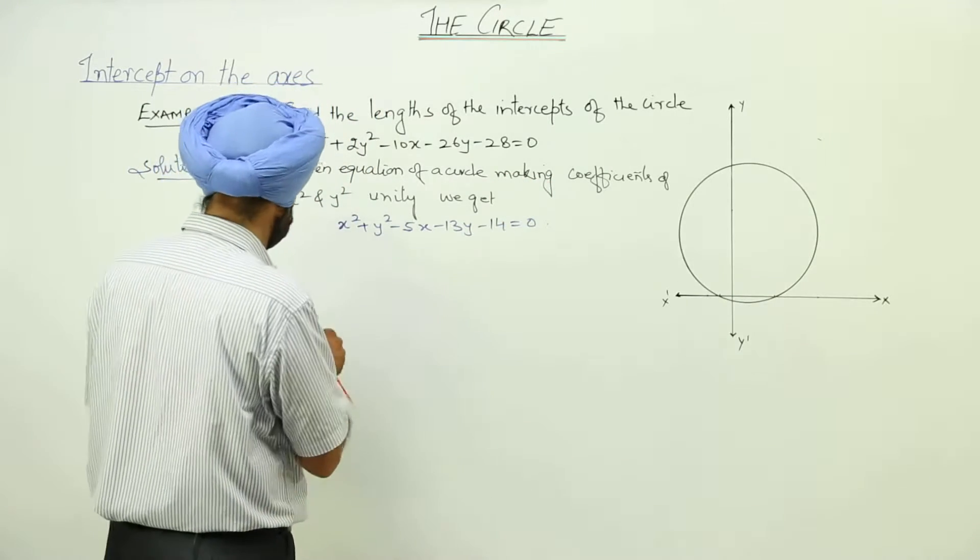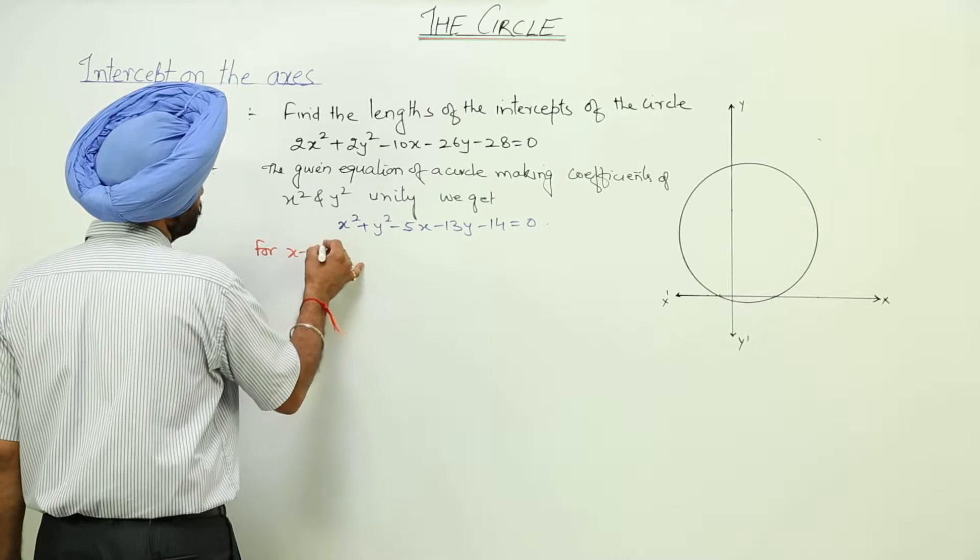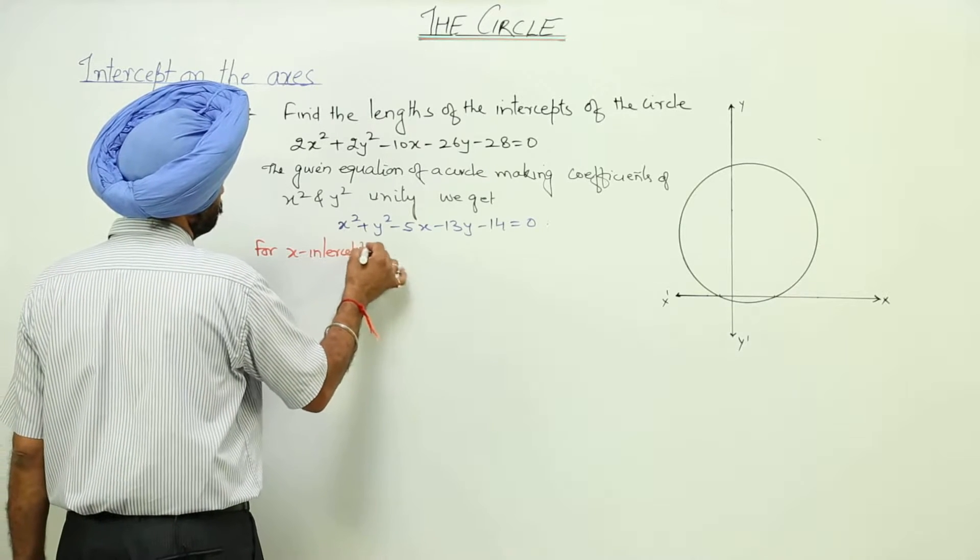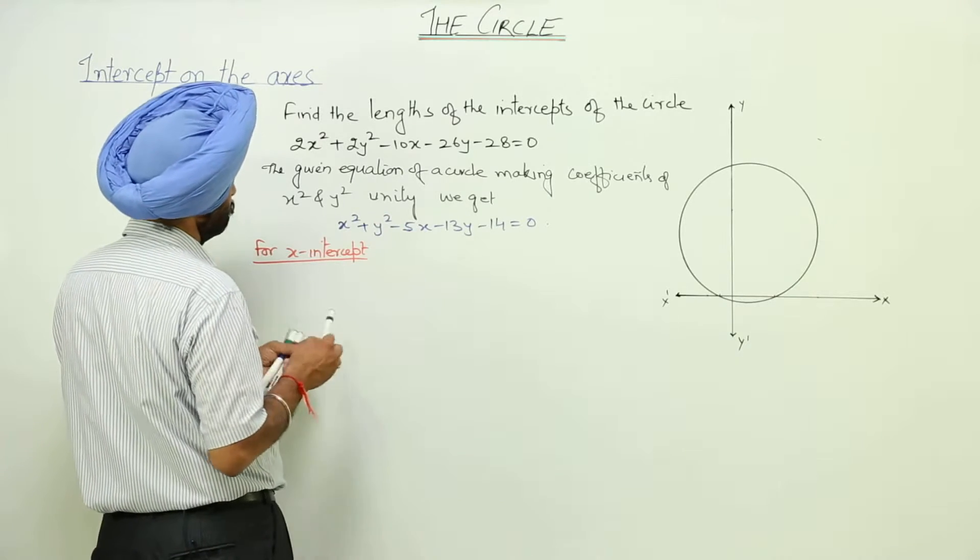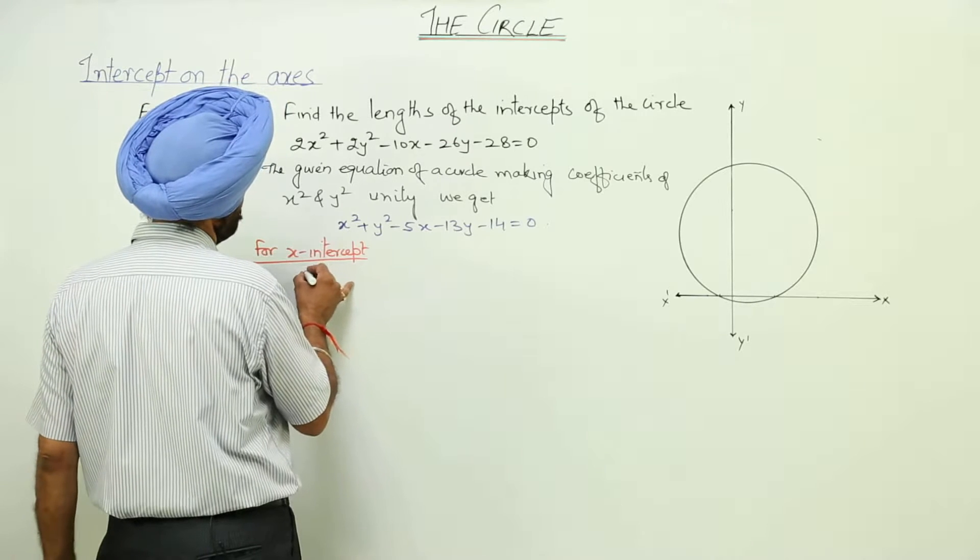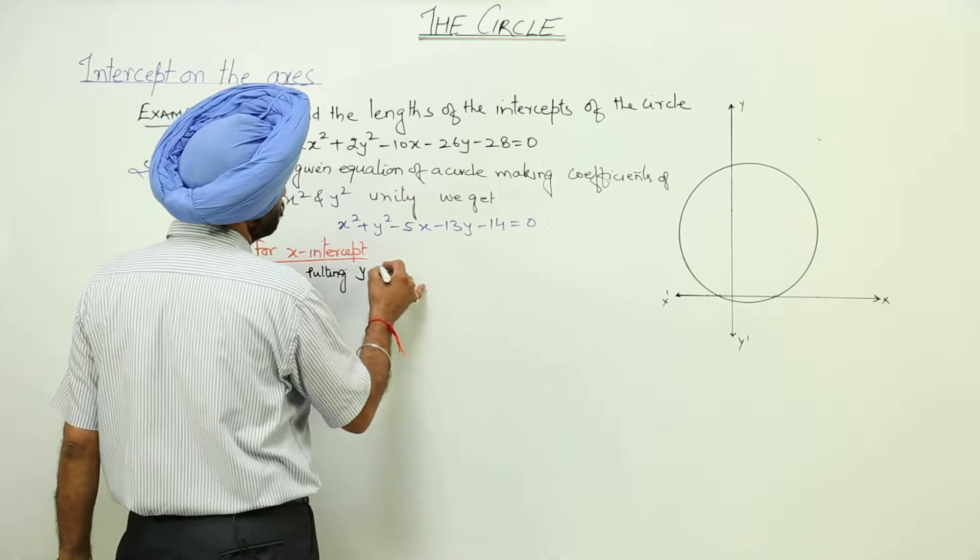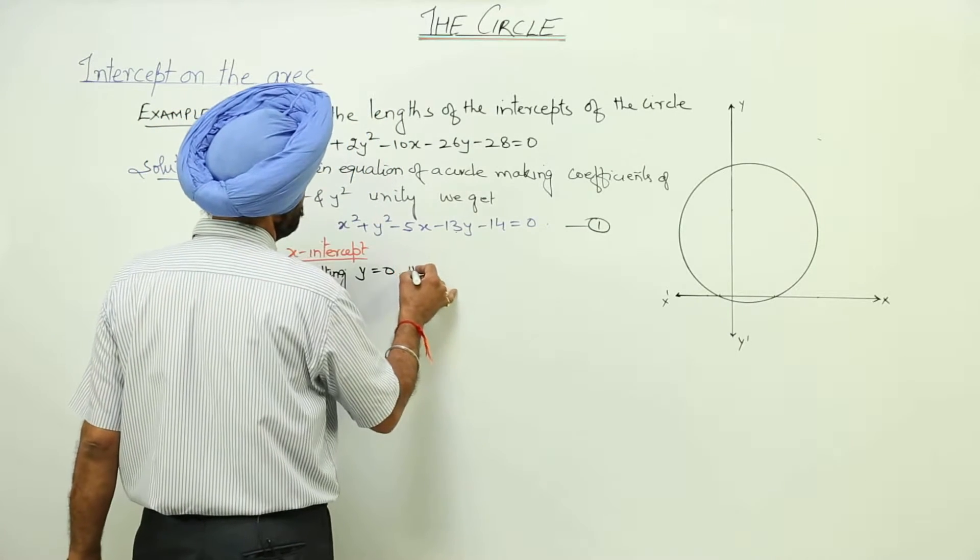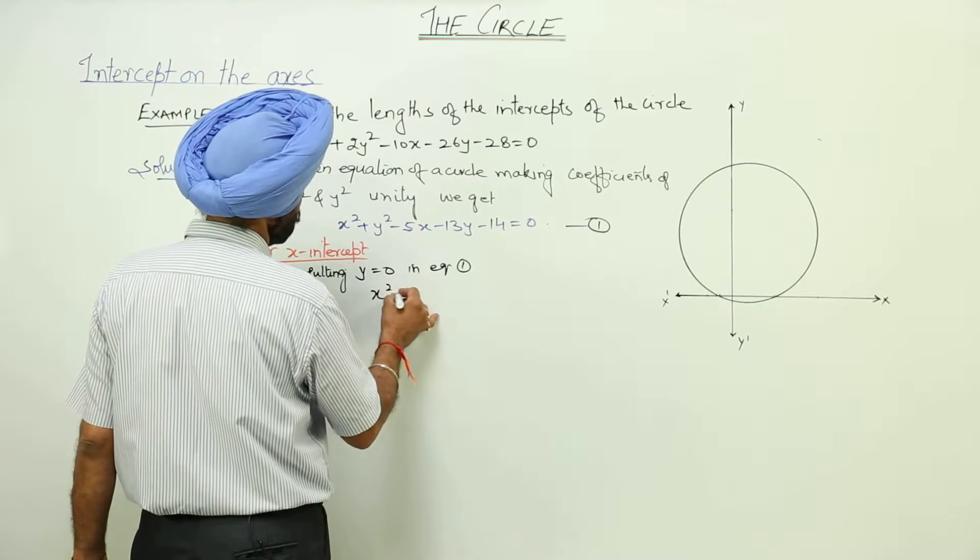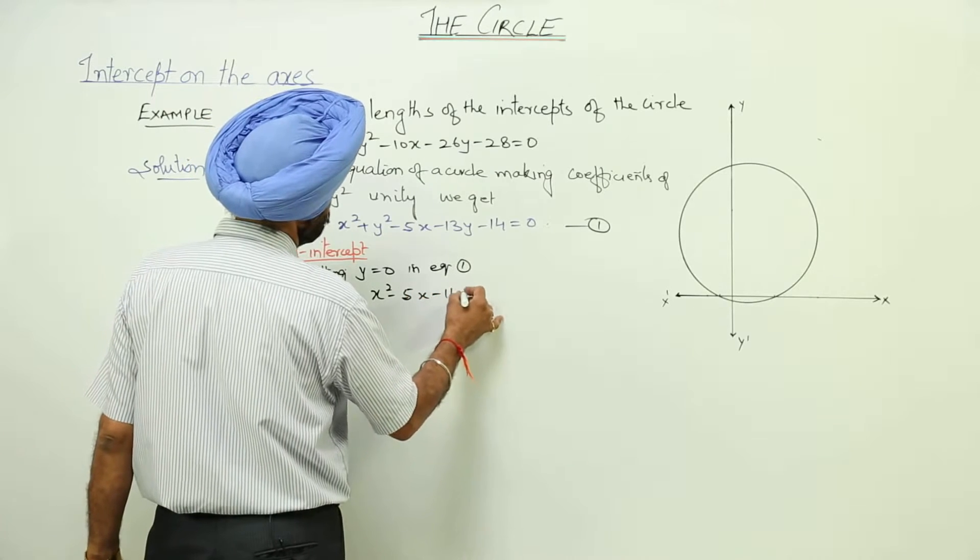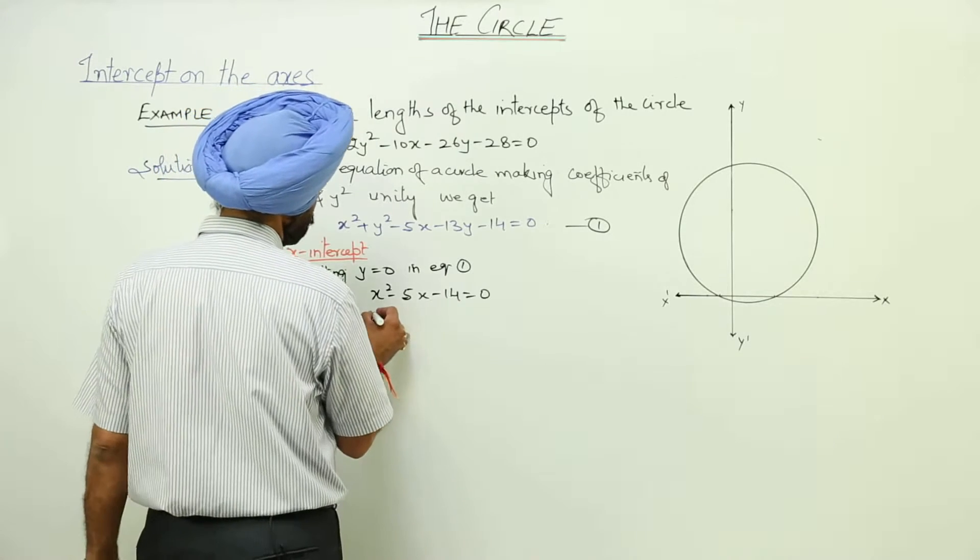Now, for x intercepts, putting y is equal to 0 in equation 1, we are getting x square minus 5x minus 14 is equal to 0. And on solving, what we are getting?